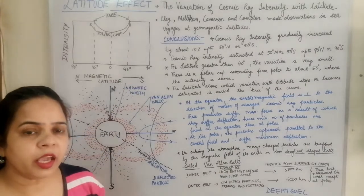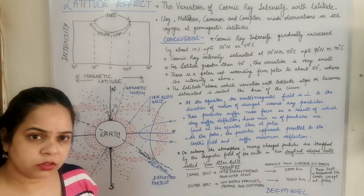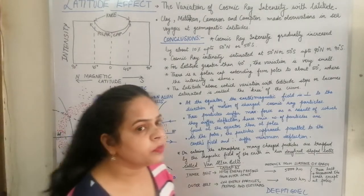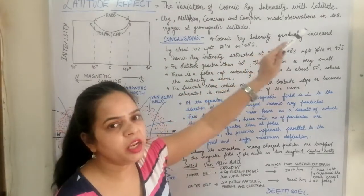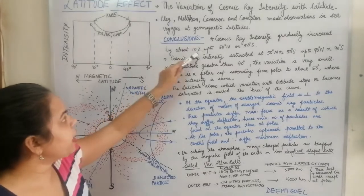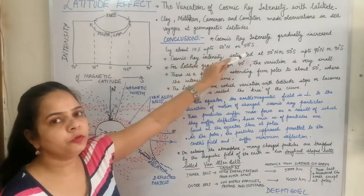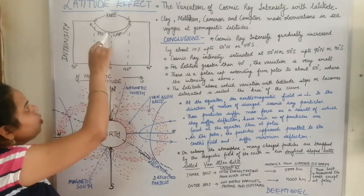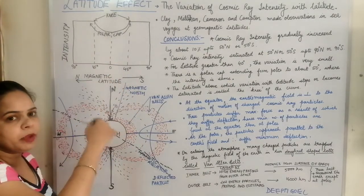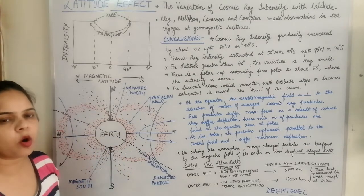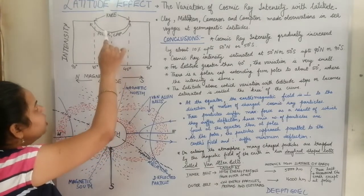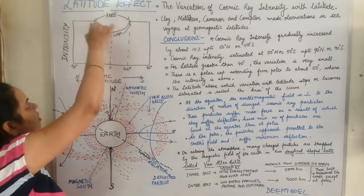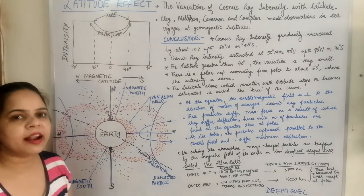From the observations of the gold leaf electroscope, they concluded that the cosmic ray intensity gradually increased by about 10% up to 50 degrees north and 50 degrees south. Supposing 0 degrees is the equator — when the voyages moved from the equator toward 50 degrees north or 50 degrees south, there was an increase in intensity. The intensity increases till about 45 to 50 degree latitudes.